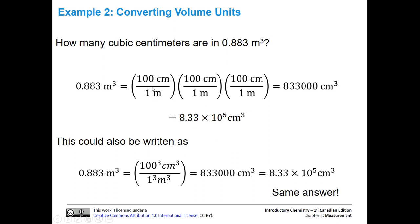One thing I want to point out: instead of having three separate conversion factors, you can put them all together and just multiply the three of them. The key here is to remember that your conversion number is also cubed. So we have 100 cubed centimeters cubed — both parts of the number are cubed. So the unit and the actual quantity. Same with meters cubed: one to the third power, which is still just one meters cubed.